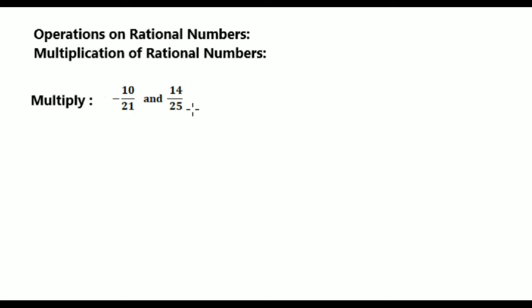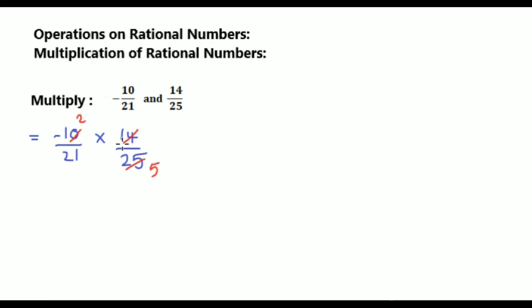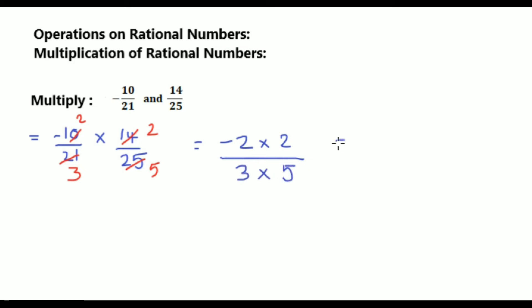See now: multiply -10/21 and 14/25. Write down equal to -10/21 into 14/25. Now we shall do cancellation: 5 table — 2 times 10 by 5 times 25; 7 table — 2 times 14 and 3 times 21. That equals to multiply numerators -2 into 2 by multiply the denominators 3 into 5. That equals to -4 by 3 fives are 15. So the answer is -4/15.